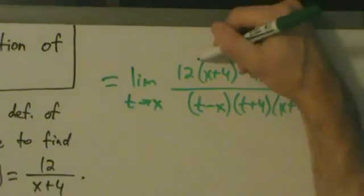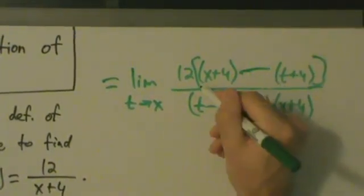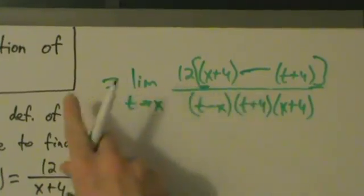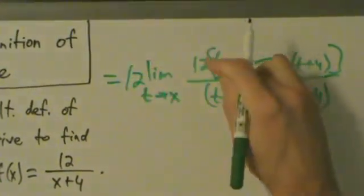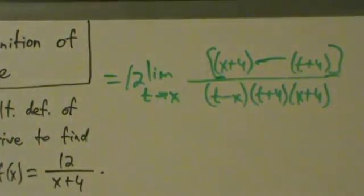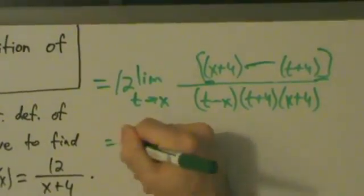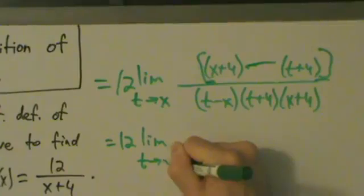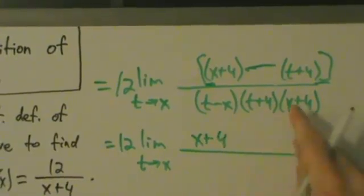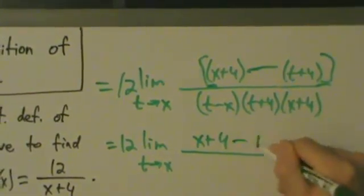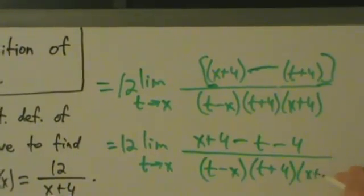So let's factor out the 12. Since 12 is just a constant, we can pull it out of the whole limit. So this equals 12 times the limit as t approaches x. On the top, dropping the parentheses, we get x plus 4 minus t minus 4. On the bottom we have t minus x times t plus 4 times x plus 4.